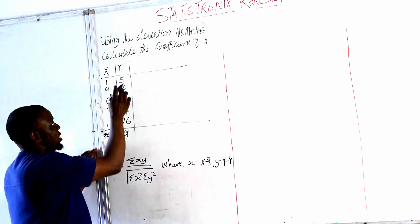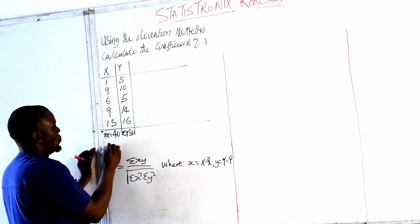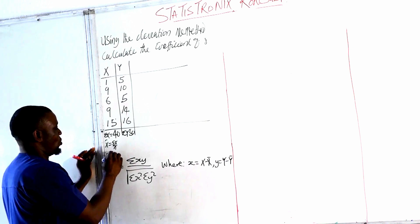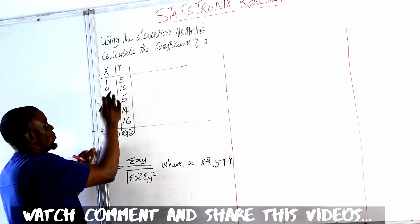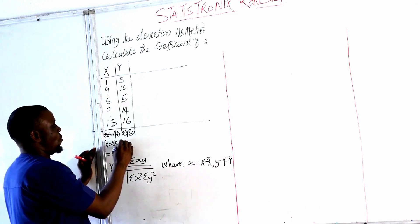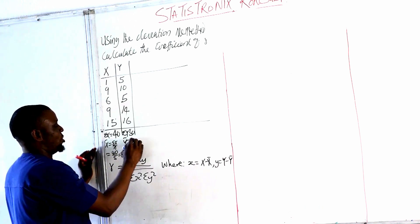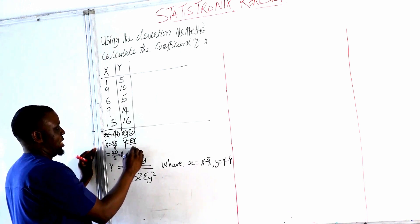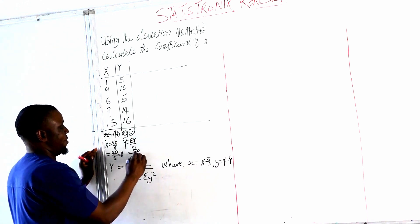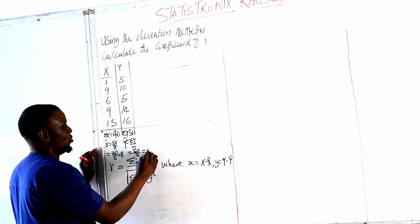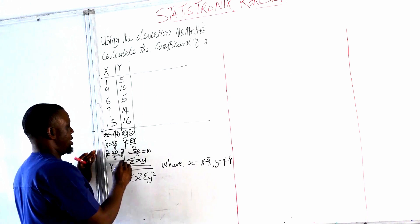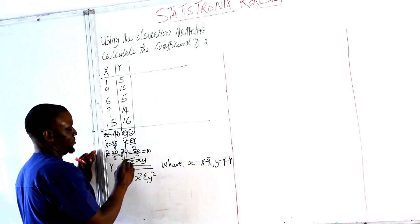Now what's our summation of Y? The sum of this is 50, which means that our X̄ will be equal to summation of X over N, and that's equal to 40 over our N is 5. So 40 over 5, which is equal to 8. Now our Ȳ will be equal to summation of Y over N, and our sum of Y is equal to 50. Our N is 5, so this will be equal to 10. Now the mean of X is 8 and then the mean of Y is 10.